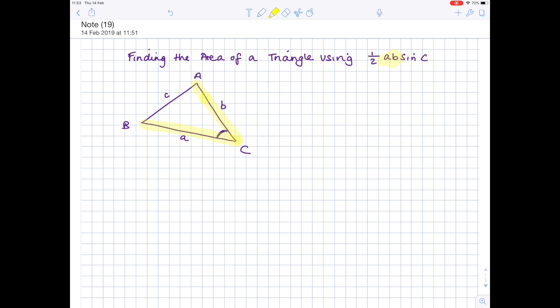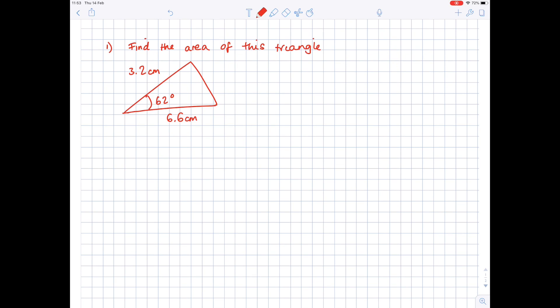But let's start with some simple examples. So here we're being asked to find the area of this triangle, so let's write out our formula. So area of triangle equals half AB sine C. So here's angle C. This will be side C. It doesn't matter what you assign the other two angles, but let's say for argument's sake that's angle A, so this will be side A. This is angle B. This will be side B.